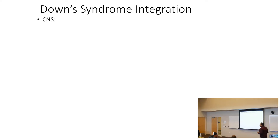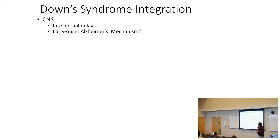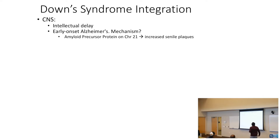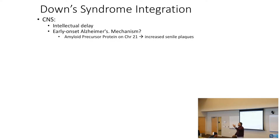Let's go systems-based with Down syndrome. For CNS: intellectual delay — these patients are cognitively affected. Why early-onset Alzheimer's disease? The amyloid precursor protein is found on chromosome 21. Down syndrome patients have three copies of chromosome 21, so you get increased senile plaques and early-onset dementia from Alzheimer's disease.